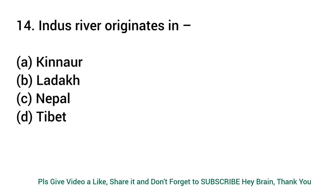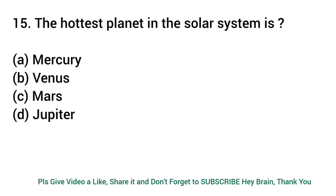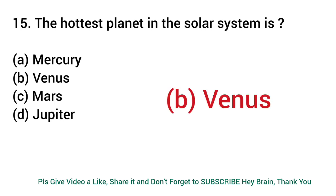Indus River originates in? Answer: Tibet. The hottest planet in the solar system is? Answer: Venus.